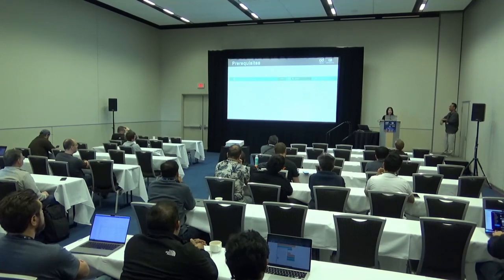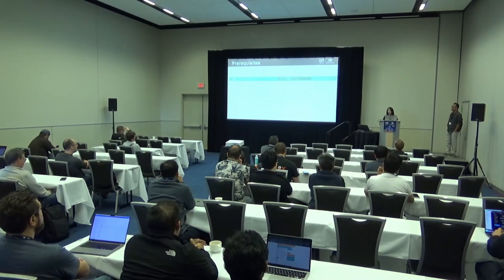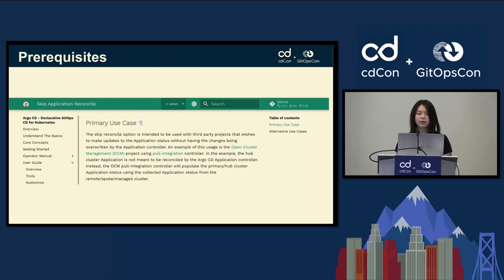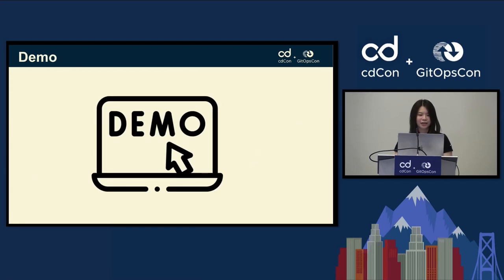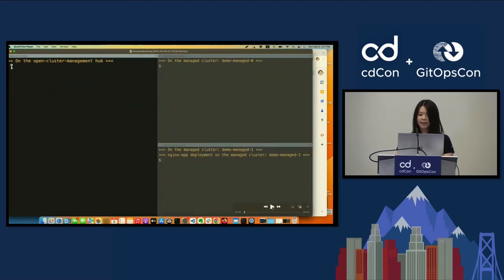We do have content meetings with the Argo CD community; we attend their meetings quite frequently and have iterated on PRs. This is currently in the official Argo CD documentation, specifically for Open Cluster Management with the pull integration. The fourth prerequisite is that you will need the skip reconcile annotation to perform the pull model on the application. Now I'm going to show you the official demo.